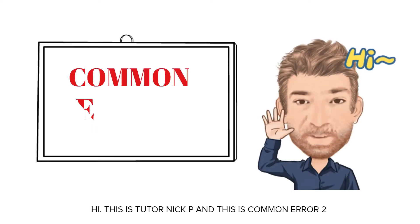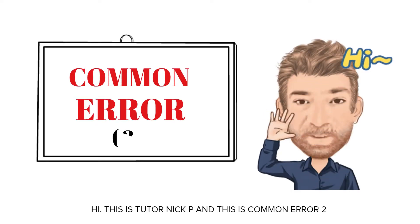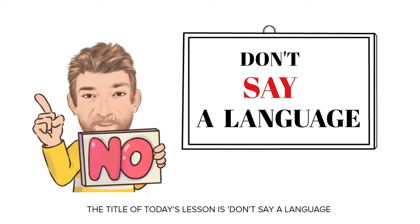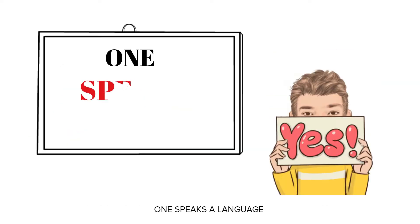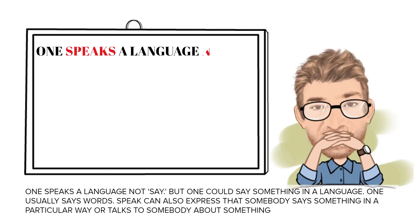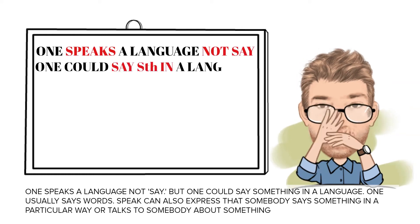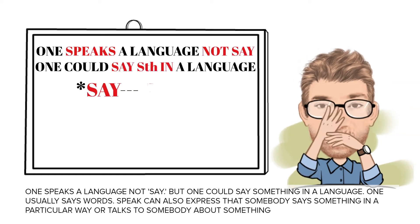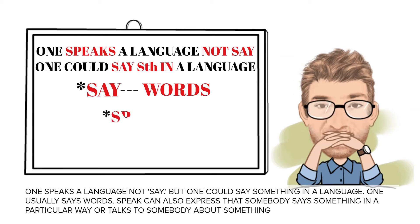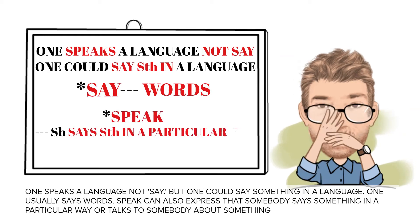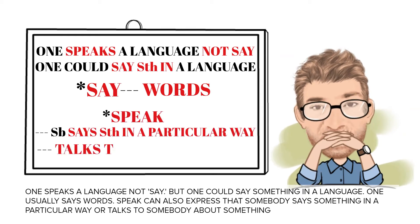Hi, this is Tutor Nick P and this is Common Errors 2. The title of the lesson is: don't say 'a language' — one speaks a language. One speaks a language, not says. But one could say something in a language. One usually says words. Speak can also express that somebody says something in a particular way, or talks to somebody about something.